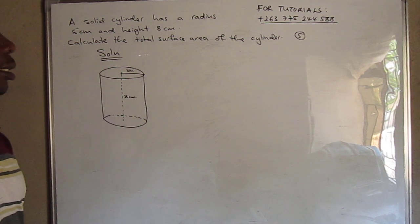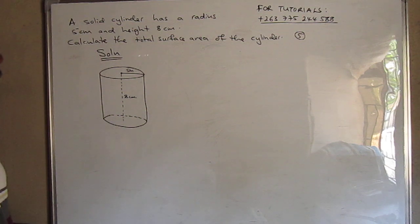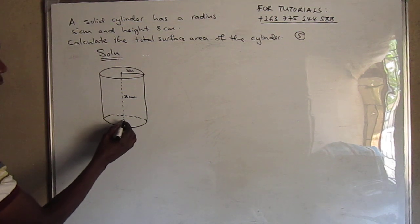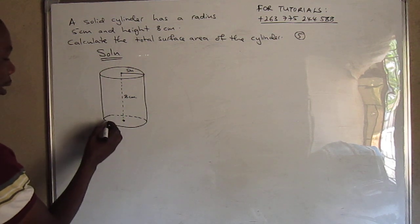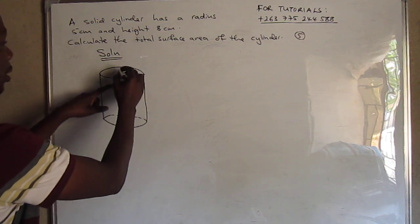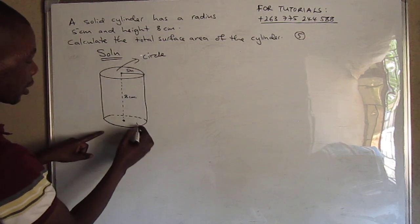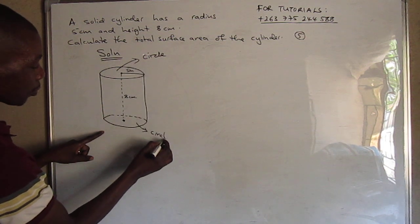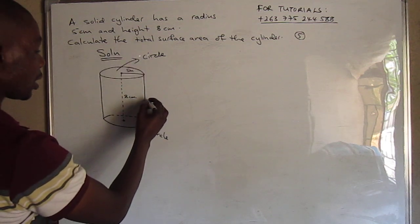So to find the total surface area of the cylinder, we have to add areas of the shapes around the shape. How many sides do we have in this case? We have this circle and we have the circle at the base, and we have the curved surface area of the cylinder.